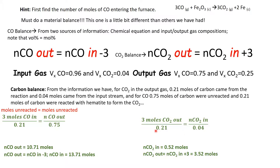For CO2: (3 moles CO2 out) / 0.21 = (moles CO2 in) / 0.04. Solving this ratio gives 0.52 moles of CO2 in. Using the statement that moles CO2 out = moles CO2 in + 3, we get 3.52 moles of CO2 coming out. The input stream values are what become important when we start calculating the heats.